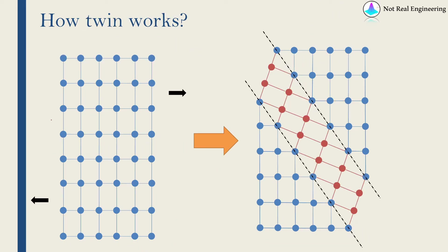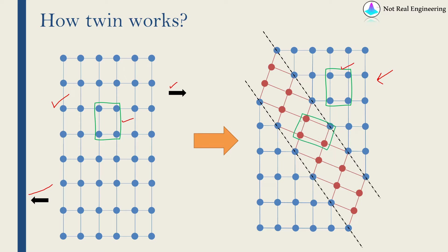Now let's go to twinning. Consider this as an initial configuration, and again we are applying a shear force. When twinning occurs, atoms rearrange themselves in a different configuration. If you consider a unit cell in the initial configuration, in the un-twinned area the unit cell looks the same. But in the twin region — this red area known as the twin zone — the unit cell also looks exactly the same, with the only difference being orientation. If you rotate one unit cell you get the other, and because the orientation is internally consistent, it is stable and atoms can stay in that configuration.